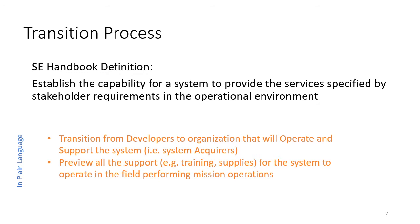In plain language, what's happening here is the system is transitioning from the developers to the organization that will operate and support the system — the acquirers, as the handbook calls it. In order to do that, it needs to provide all of the support: specifically training, supplies, and equipment for the system to operate in the field performing mission operations.